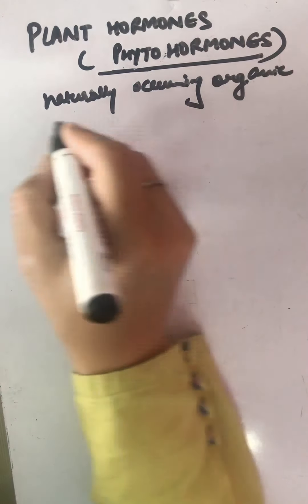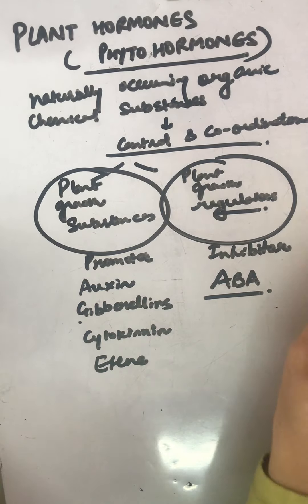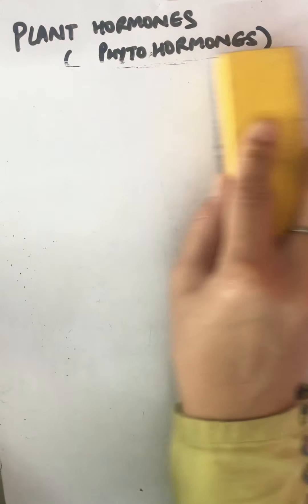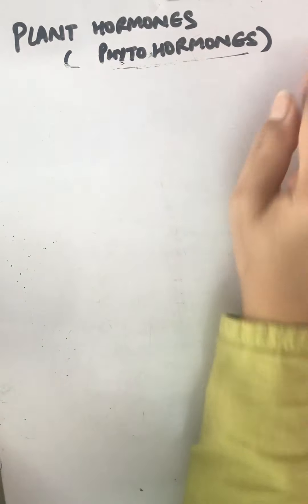In our study, we have auxin, gibberellins, and cytokinin as promoters, along with ethene as a promoter. Abscisic acid (ABA) is the inhibitor.